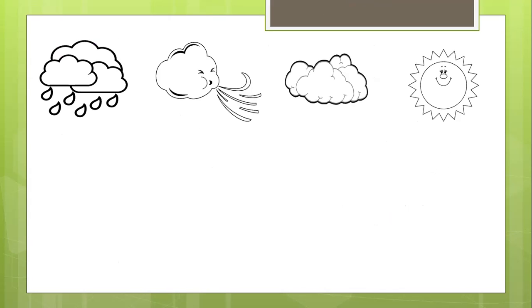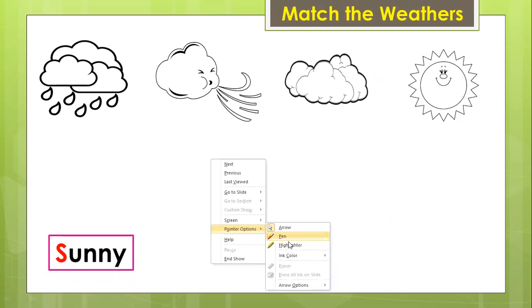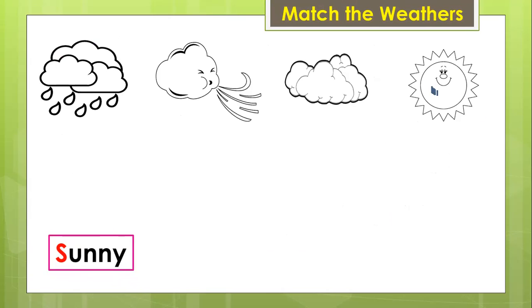Next one, what are we going to do? We are going to match the weathers. All right, let's read. Sunny, sunny, sunny, sunny. Can you say sunny? Sunny, sunny weather. Which one is sunny? Can you match to the picture? I see here the sun. It is sunny, so I'm going to match sunny to the word sunny weather.